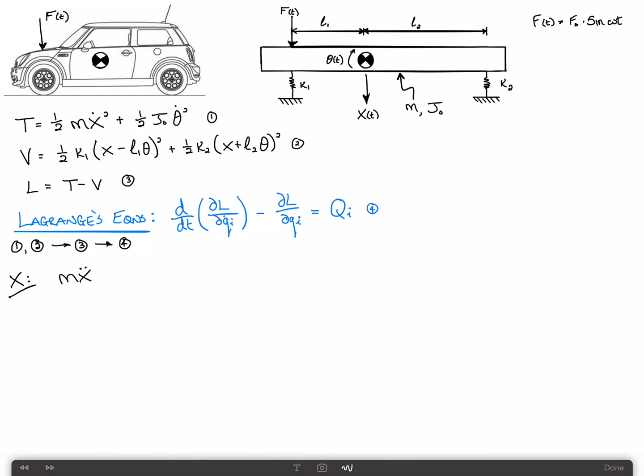And the derivative, the negative derivative, well, it's two negatives, right? Negative V and we're taking the negative of that. So it's actually just the positive derivative of V with respect to X. And that is plus K1 times X minus L1 theta, since the two cancels with the half, plus K2 times X plus L2 theta. And that is equal to F of T.